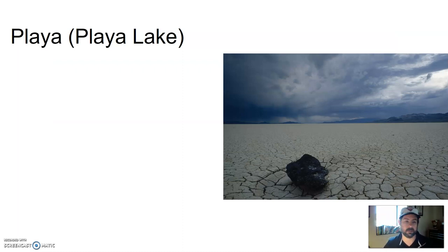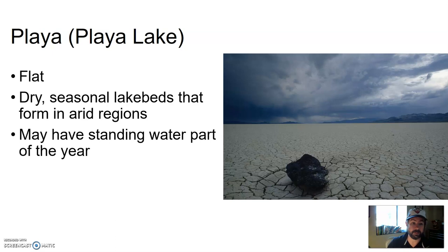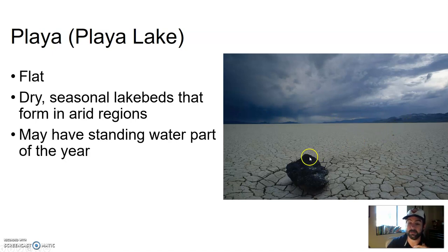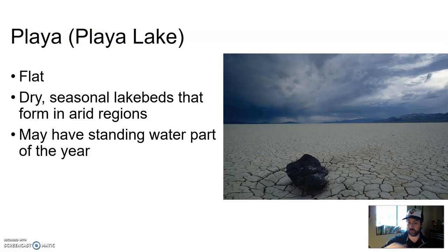A playa lake — or sometimes just referred to as a playa — is a dry, seasonal lake bed that forms in arid regions. Parts of the year it may have standing water; other parts it'll be dry. As it rains, water from the surrounding mountains breaks down and brings sediment material down to the valley floor, gets covered in water, then the water evaporates away, depositing the sediment to leave these very flat structures called playas. Sometimes people race on playas — there are a few where they go to set land speed records because they're just so flat.